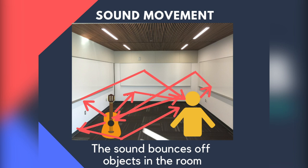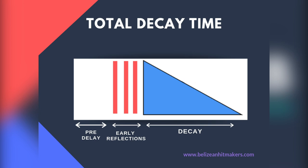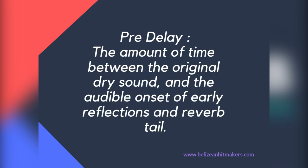The two main parts of reverb we use in the dancehall vocals will be the pre-delay and the decay time, so we're gonna focus on just those two today. This diagram shows the decay, the early reflections, and the pre-delay. The early reflections are the first sound you hear after the clap or after the snap — that first sound you hear after is the early reflections.